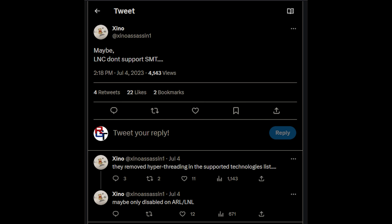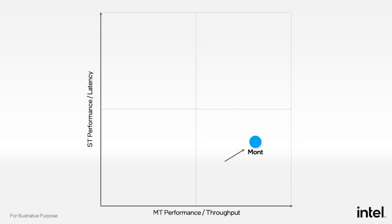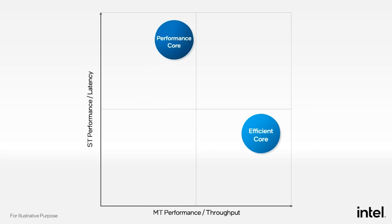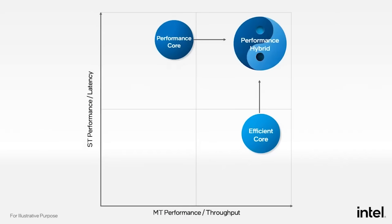First of all, hyperthreading is gone. A lot of folks do know that already — Intel's Arrow Lake processors' performance cores will no longer support hyperthreading, which has been a mainstay for Intel processors for quite some time. Whether we're talking older architectures like Sandy Bridge, which had hyperthreading across all cores, or more recent ones where only the performance cores had hyperthreading — this has just been something Intel have been pushing for quite some time.